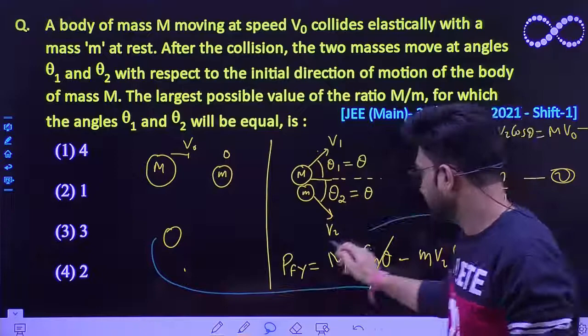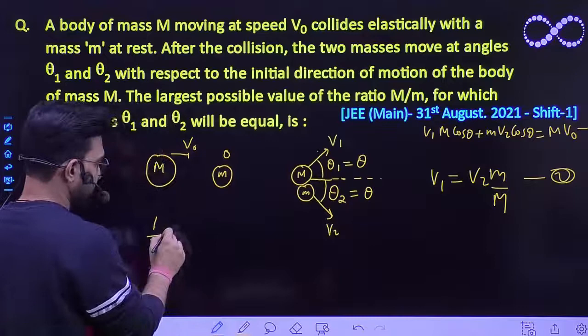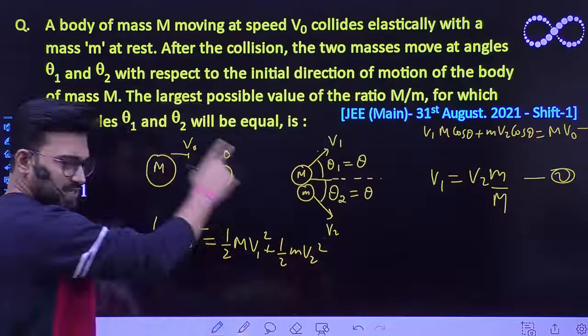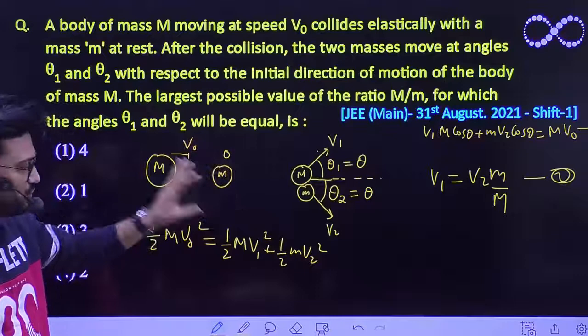Since this is an elastic collision, kinetic energy is conserved. Initial kinetic energy is (1/2)·M·V0² and it must equal (1/2)·M·V1² + (1/2)·m·V2². Cancelling the halves, the third equation is: M·V0² = M·V1² + m·V2².